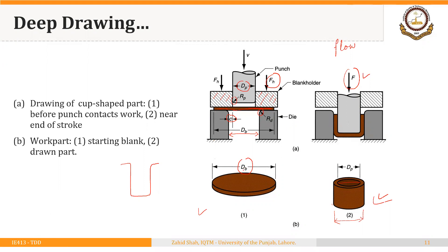We will focus on these process parameters as we move on — how to calculate the diameter of the starting blank, the value of the radius on the punch as well as the radius on the die, and how to calculate the drawing force as well as blank holder force. All these parameters — starting blank diameter, punch radius, die radius, clearance between punch and die, blank holder force, and drawing force — will be discussed in detail.